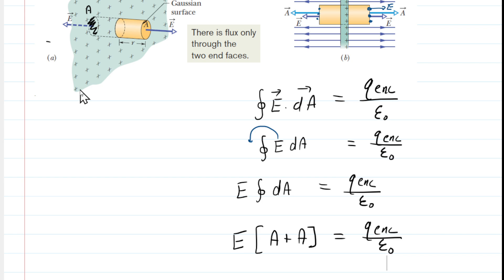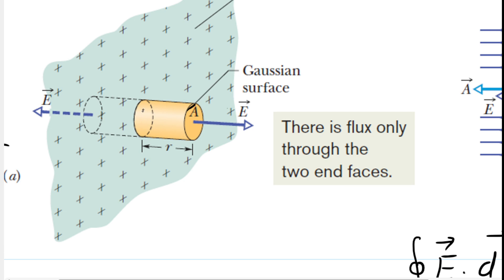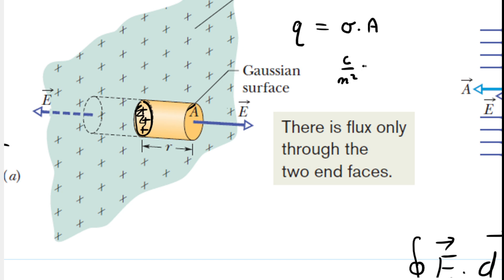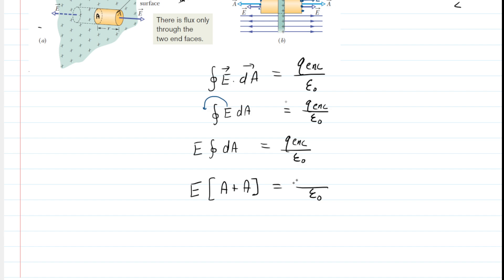Now we get to the enclosed charge. Zooming in on the picture, the charge within the Gaussian surface is located where the sheet intersects the Gaussian cylinder. To find that amount of charge, we know the total charge distributed across that area is the surface charge density multiplied by the area. Surface charge density is measured in coulombs per meter squared, and area in meters squared, so multiplying gives coulombs. The area there is still A — the same area as the end caps. So Q-enclosed is replaced by the surface charge density multiplied by the area.